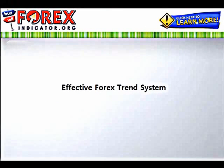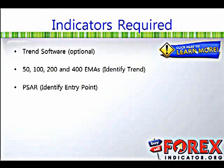The indicator required is basically a trend software that helps me scan 37 currency pairs at one go, which makes things easier for daily analysis. It's optional — for those who don't want this software, you can use the 50, 100, 200, and 400 EMA plotted on the same chart to identify the trend.